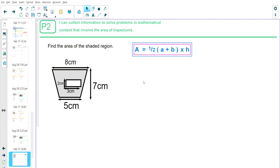Right, the example is find the area of the shaded region. So here we have a shape that's a trapezium and inside it, there's a small rectangle. First thing I'm going to do is find the area of the trapezium.